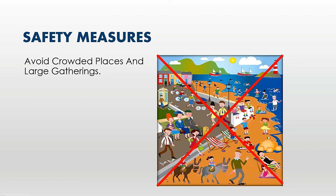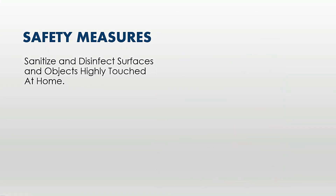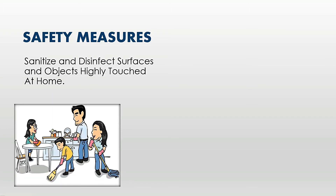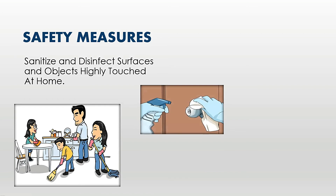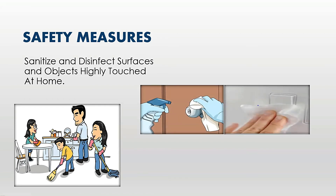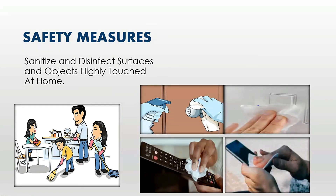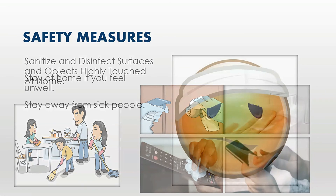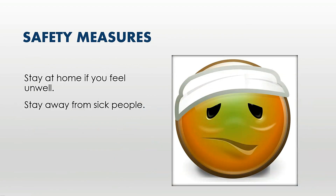Another safety measure is you should sanitize or disinfect objects that are highly touched at your home, such as door knobs, light switches, or your TV remote. If you're coming from outside, you should also disinfect your phone, because the coronavirus can latch on to glass for 72 hours.